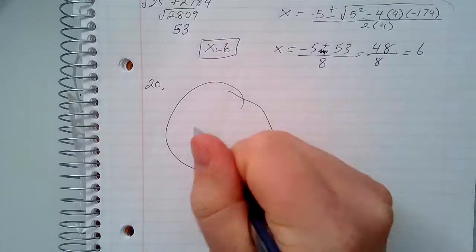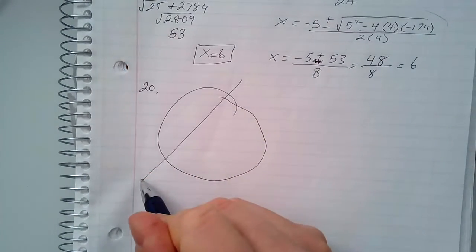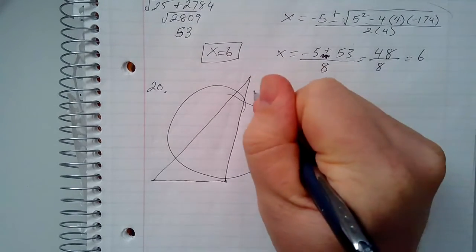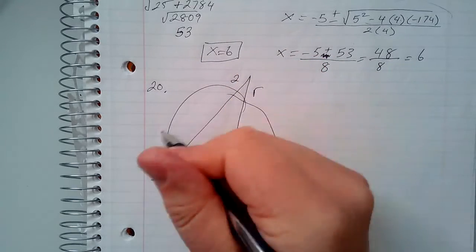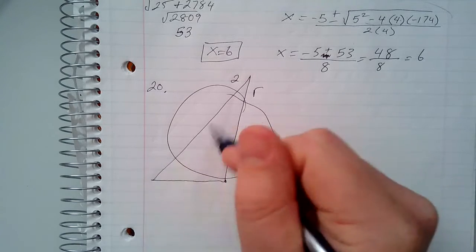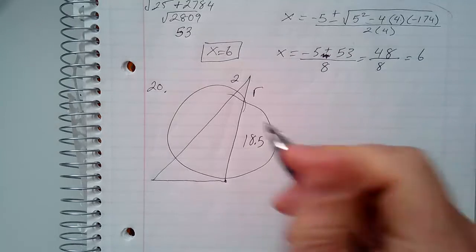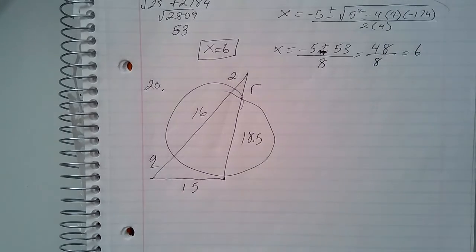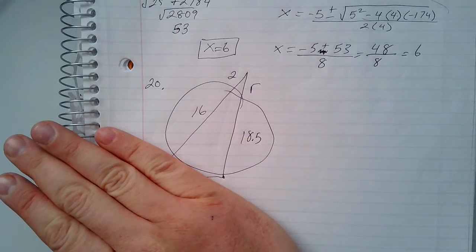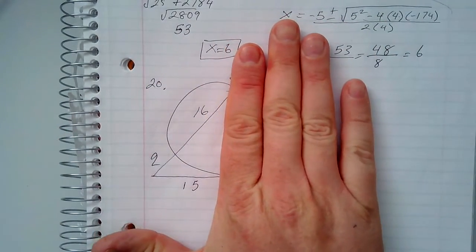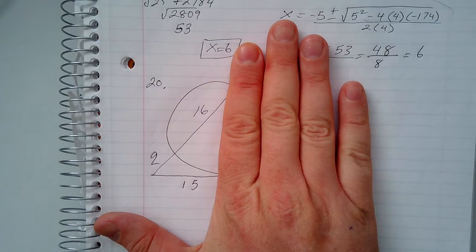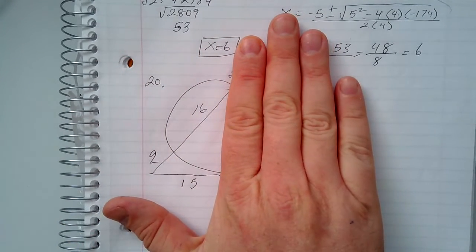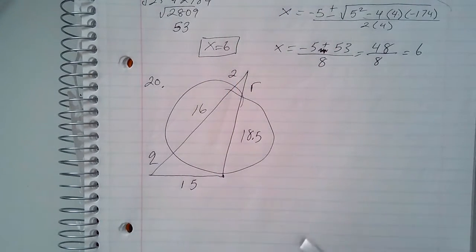Number 20 says we have a circle with a triangle going through it — we can't assume it's a right triangle. We have two secants and then also a secant and a tangent, so this is actually two different problems. The first problem will be the two secants to solve r, and the second problem will be the tangent and secant to solve q.